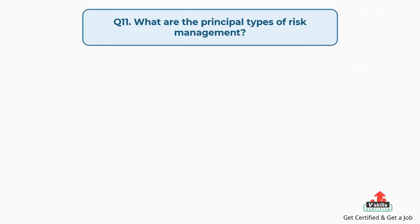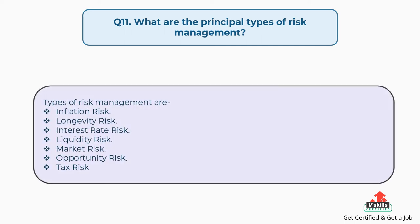Question number eleven: what are the principal types of risk management? Types of risk management are: inflation risk, longevity risk, interest rate risk, liquidity risk, market risk, opportunity risk, and tax risk.